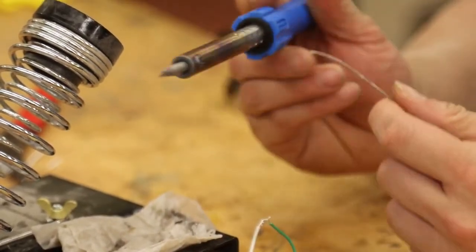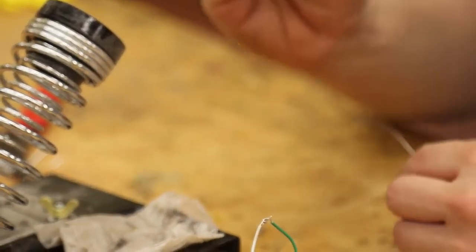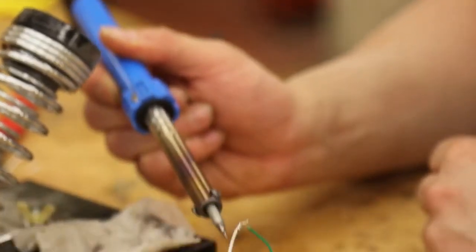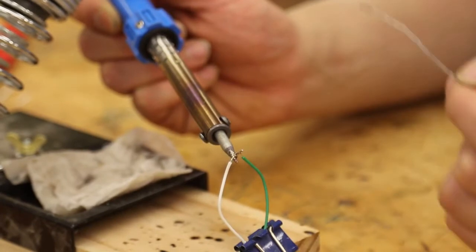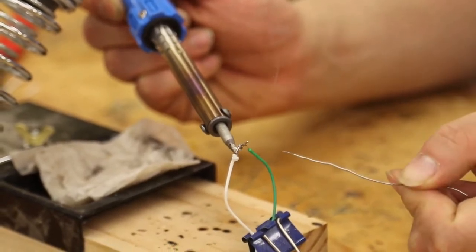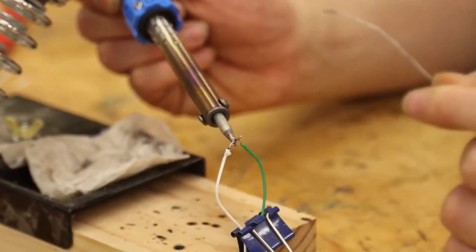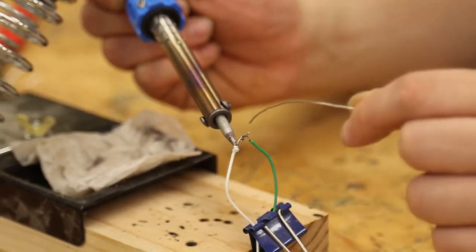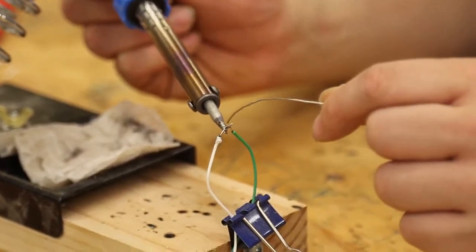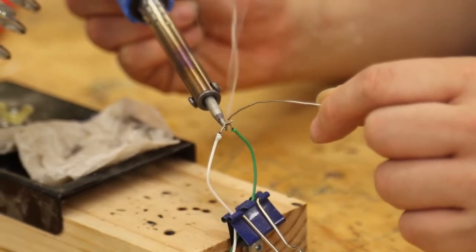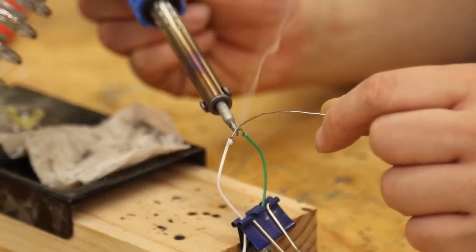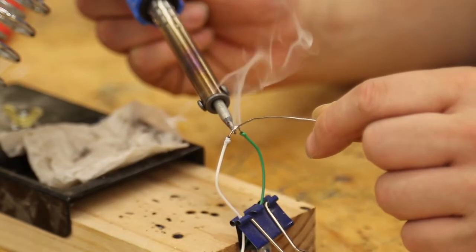Now you're going to take the soldering iron and you're just going to hold it on the bottom of the wire. What I'm doing is I'm essentially getting the wire hot. Take the solder and just drop it on the top. And when it's hot enough, the solder will melt onto the wire.